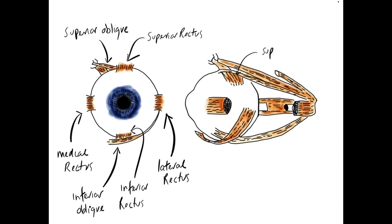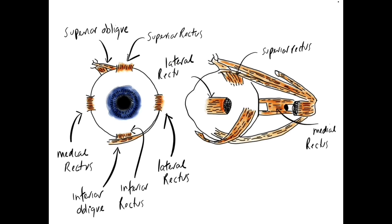Looking at the next diagram, we can see a different view of the eye from a posterior view. We can see the superior rectus again — this is inserting at an oblique angle coming from the axis of the orbit. Don't forget those additional movements to elevation: adduction and medial rotation. Medial rectus is straightforward — with the optic nerve cut away, that's all about adduction.